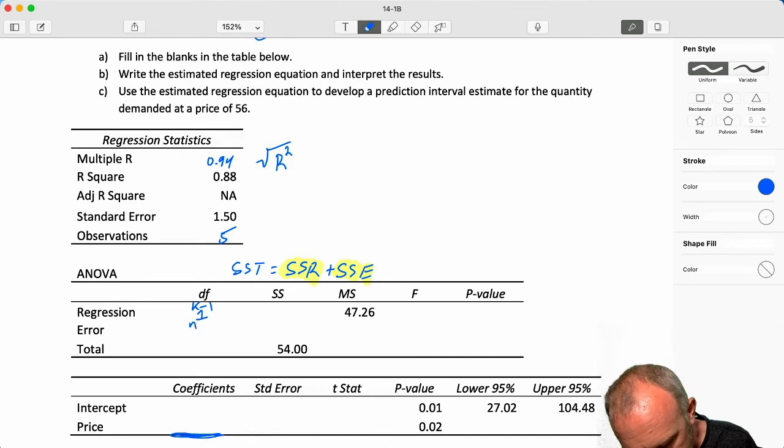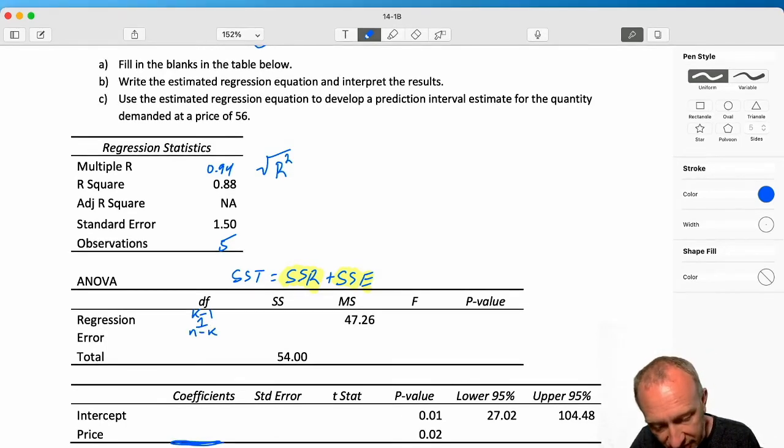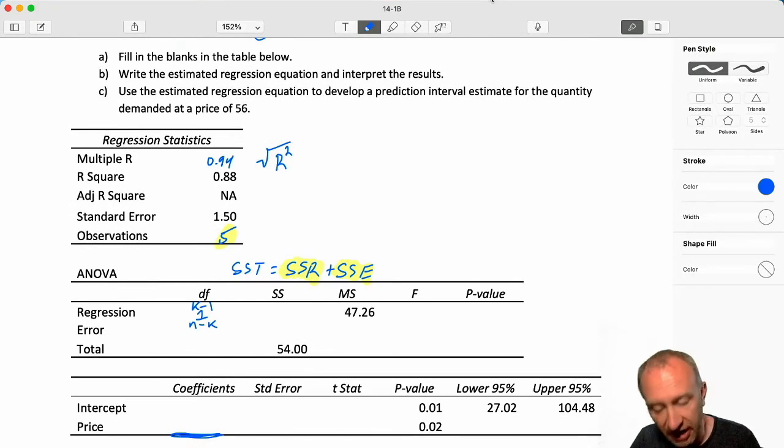Error, this is n minus k. Again, I have 5 observations. We're estimating 2 coefficients, and so my degrees of freedom on error, 5 minus 2, I have 3. Total, n minus 1, or I can just add up the degrees of freedom above. n minus 1, 5 minus 1 is just 4.